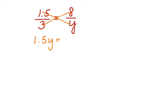Now, let's solve for the width. We have 1.5 over 3 is equal to 8 over Y. Let's cross multiply.